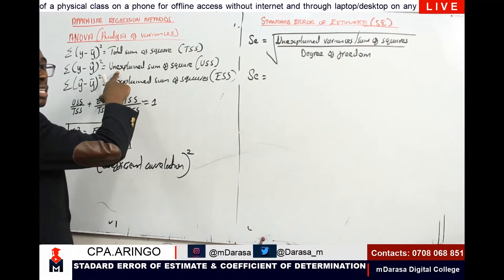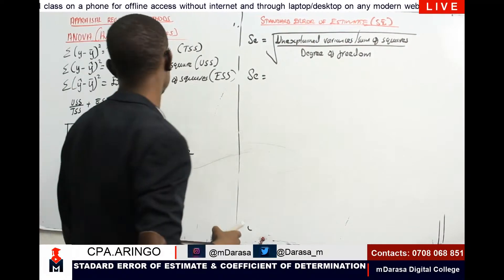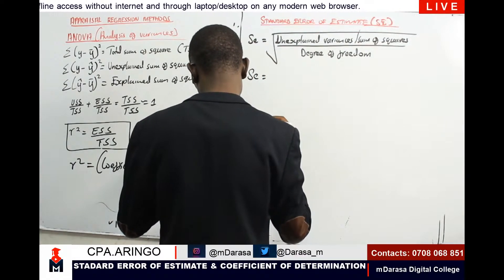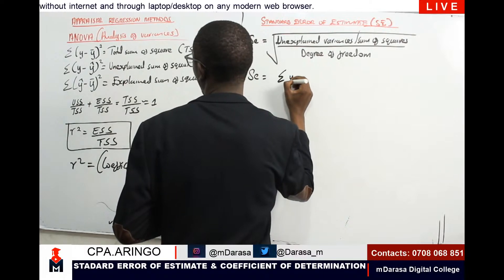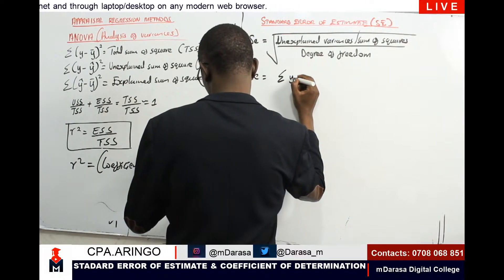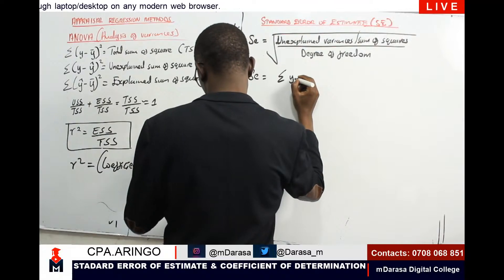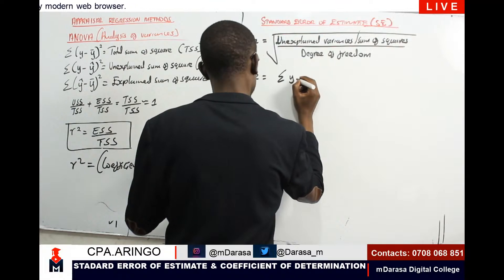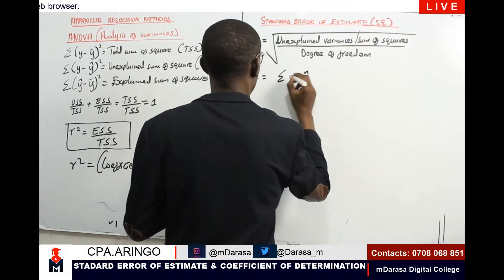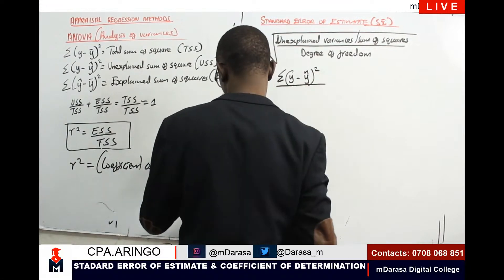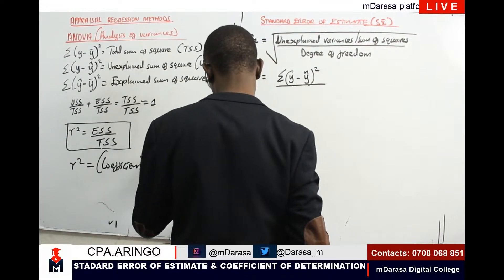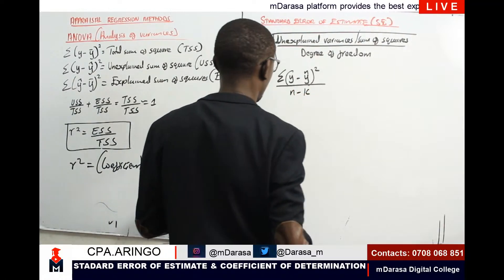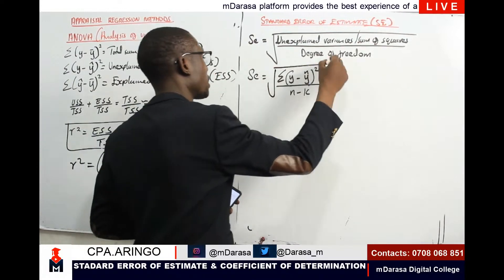We had already looked at how to determine unexplained variances. The formula is: summation of (y minus y-hat) squared — that is the unexplained variances. We divide by the degree of freedom, where the degree of freedom v equals n minus k, and don't forget the square root.